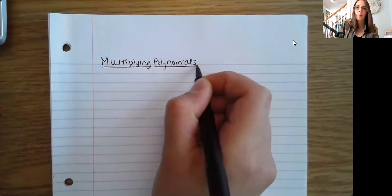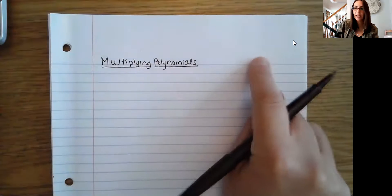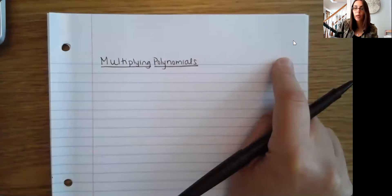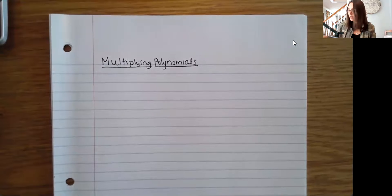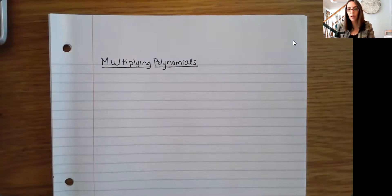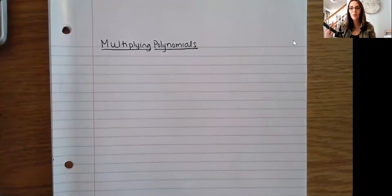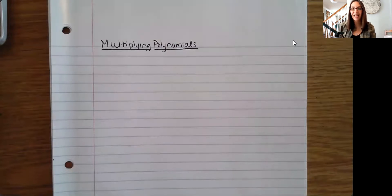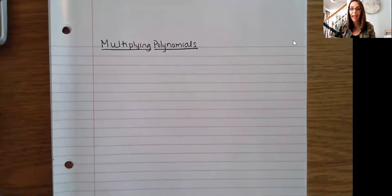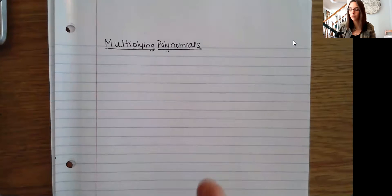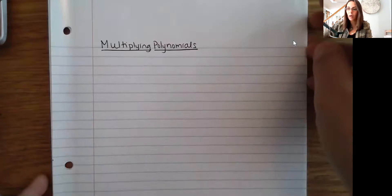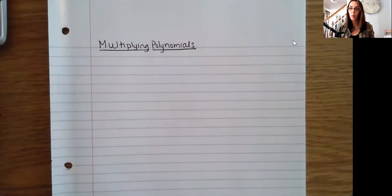We're starting with our title up top and you can always think about adding in your date or the week in which you're working to help you stay organized. As we go through, just try to follow along and write what I write. If you want to write extra stuff, always do that too — these are still your notes. Our goal is to stay nice and organized so that we can read them and follow along later.